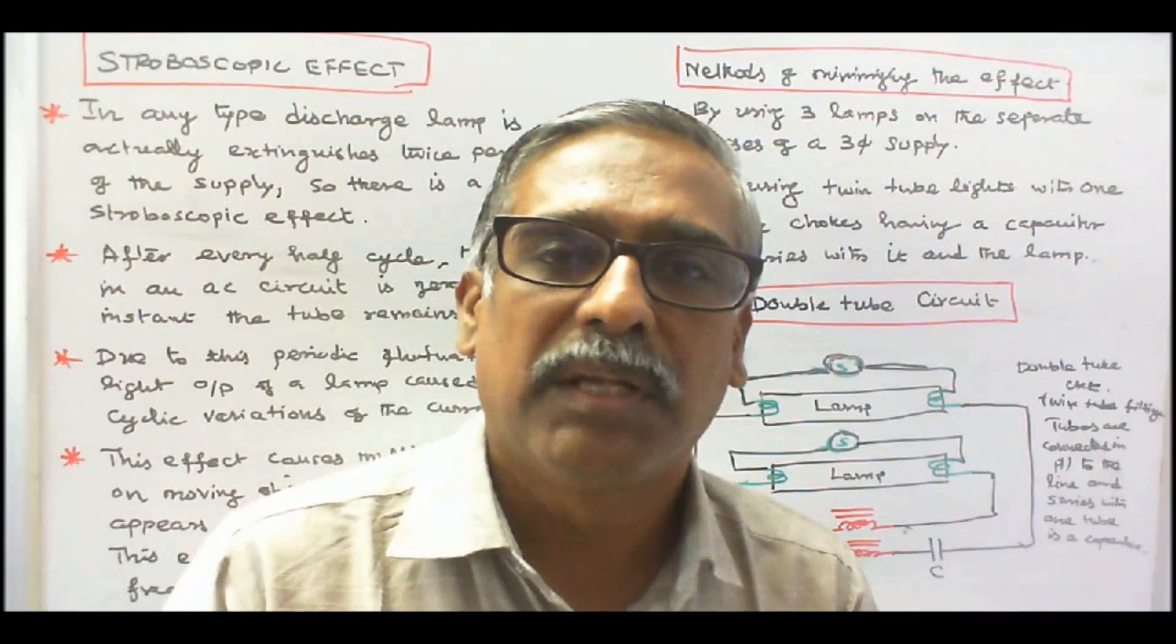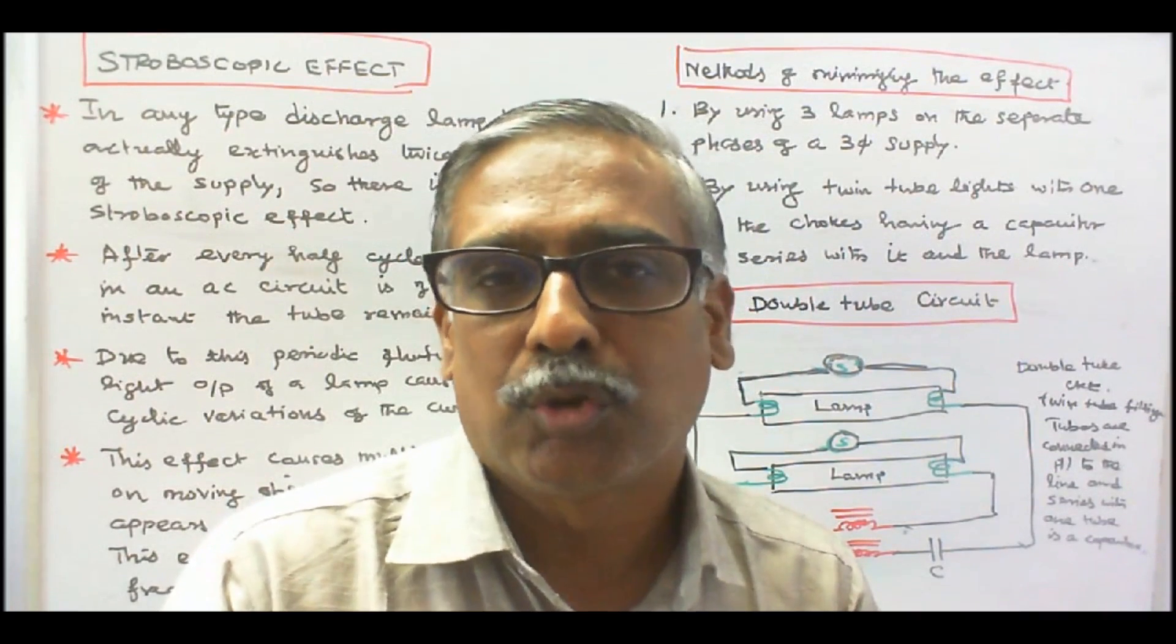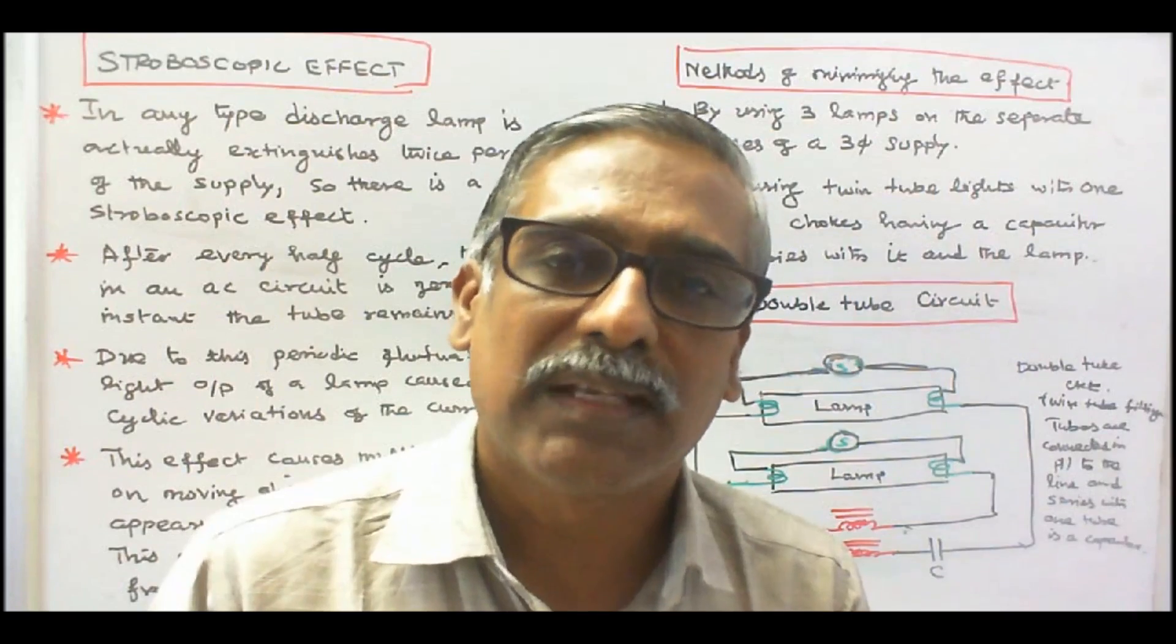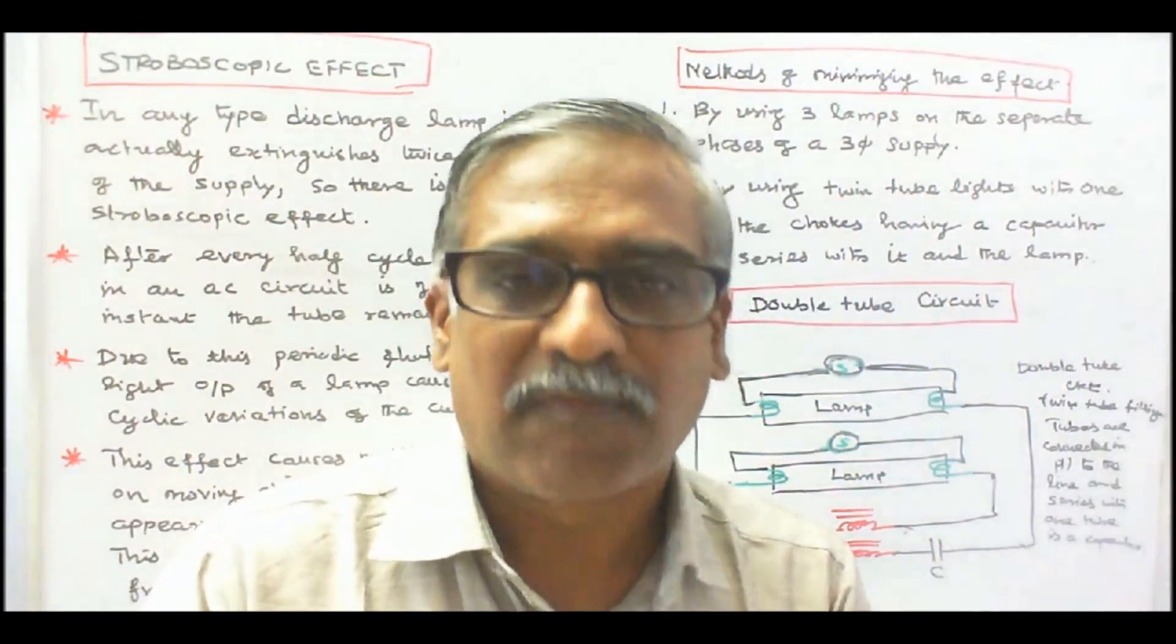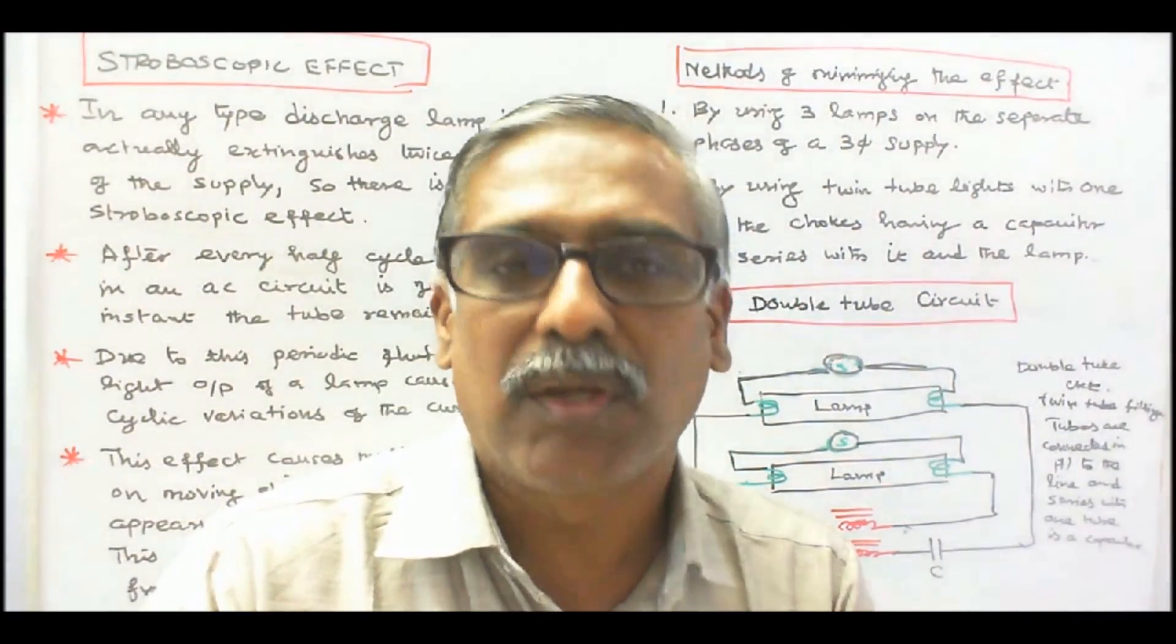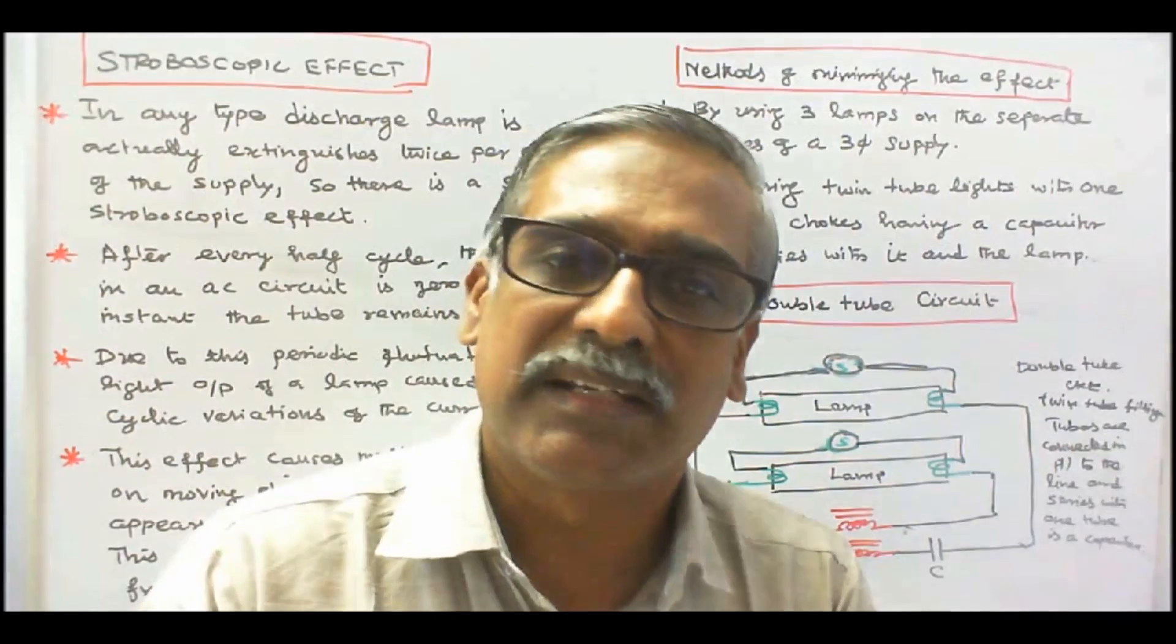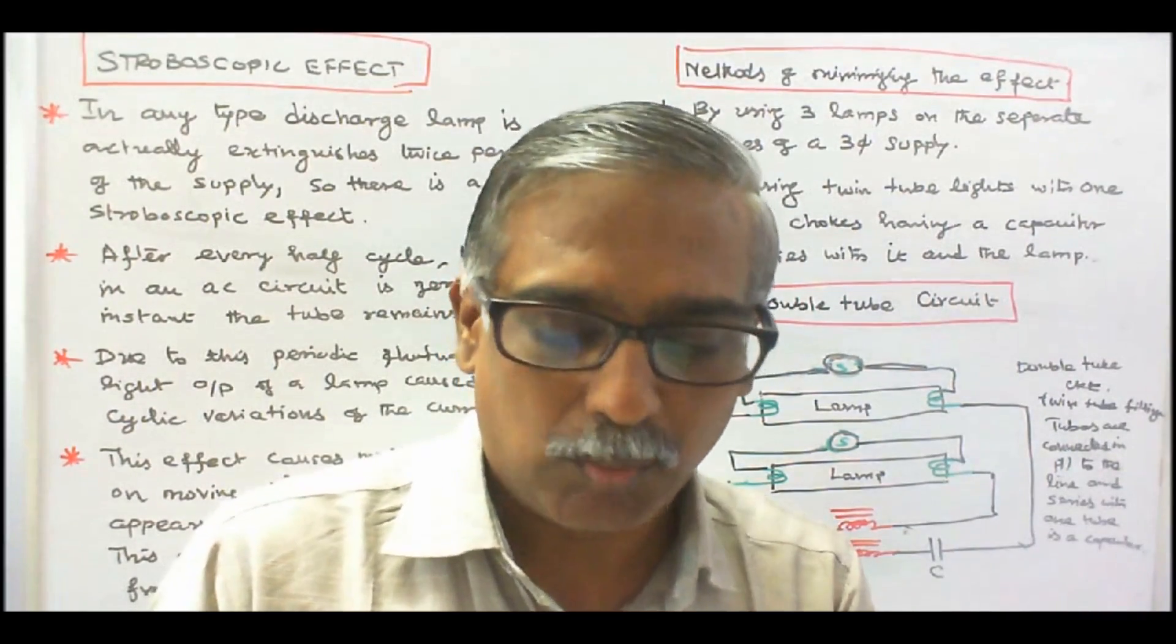What is meant by stroboscopic effect? The word stroboscopic is an adjective. The noun is stroboscope. Stroboscope is a scientific instrument that provides a flashing light. Synchronized with the periodic movement of an object. Can make moving objects appear stationary.